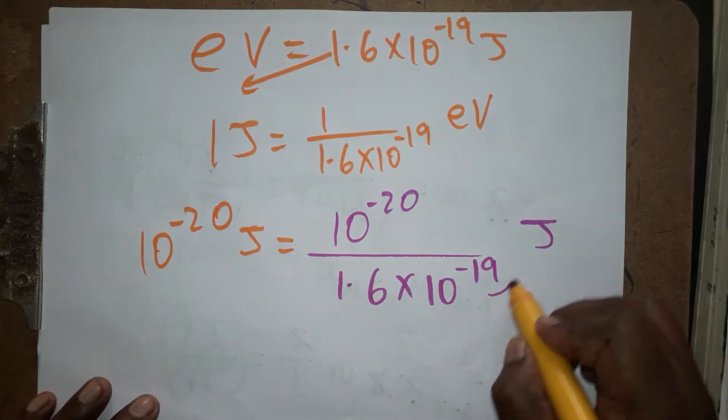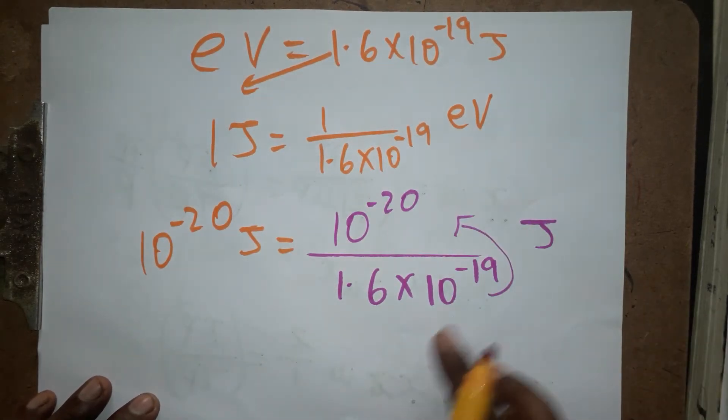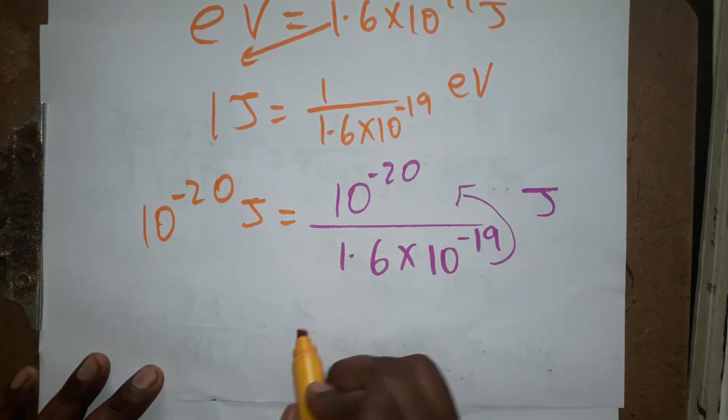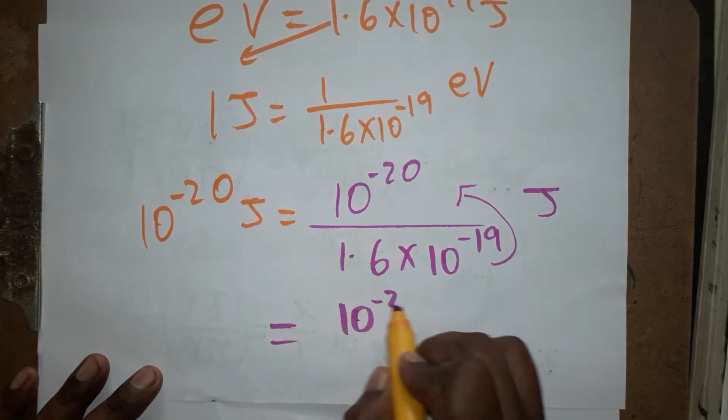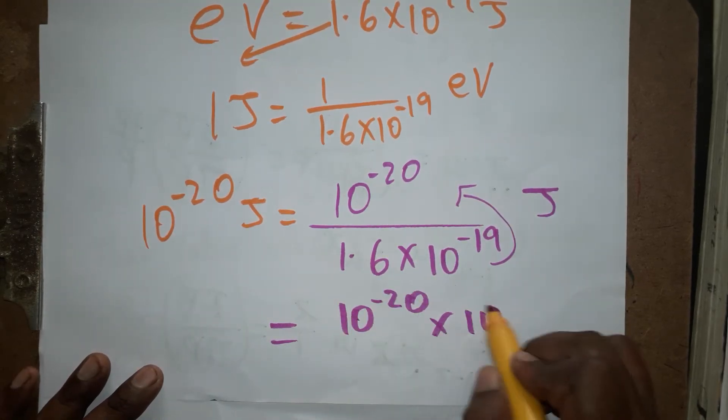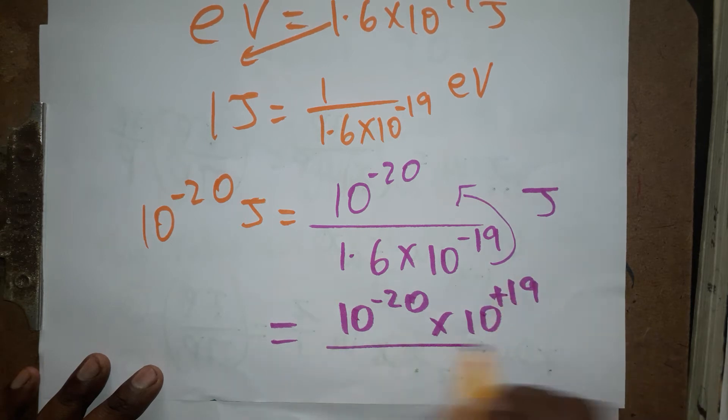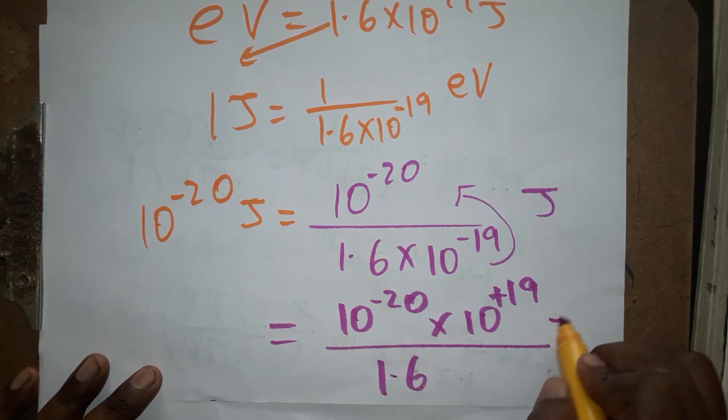If you bring this value from denominator to numerator, minus 19 becomes plus 19. So 10^-20 × 10^19 over 1.6. The answer will be in eV, not joules. When you divide this number, the unit converts to eV.